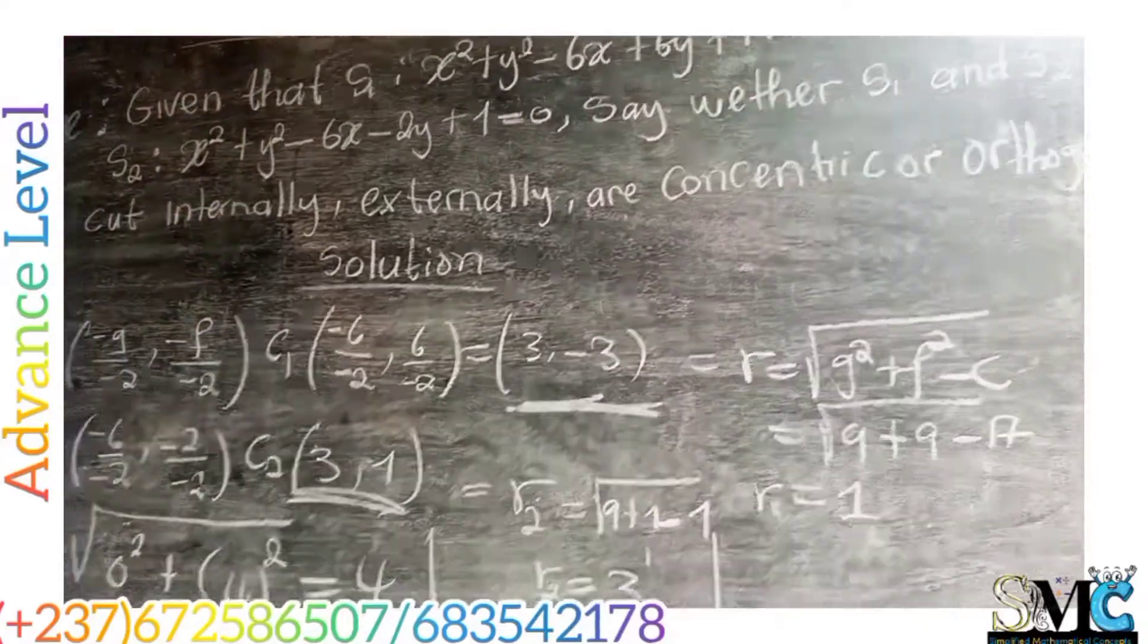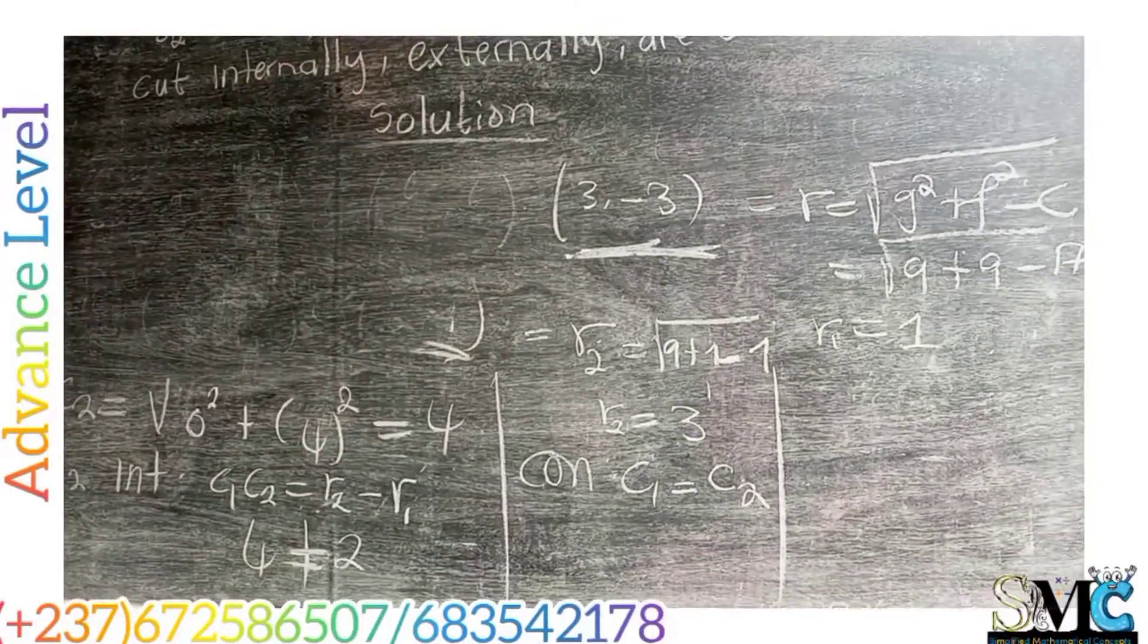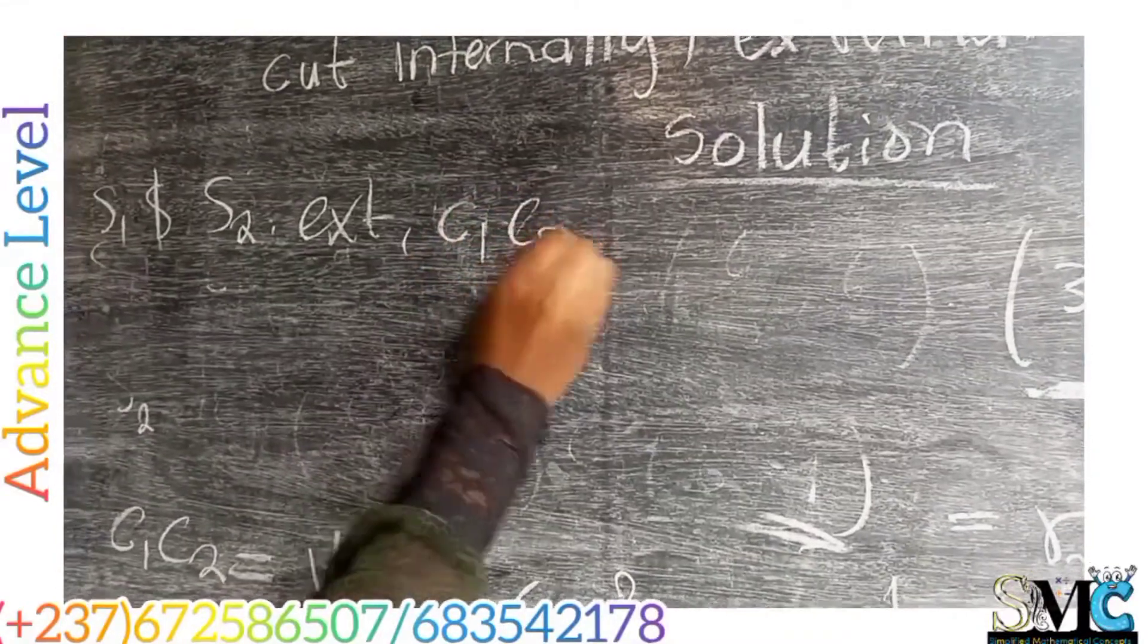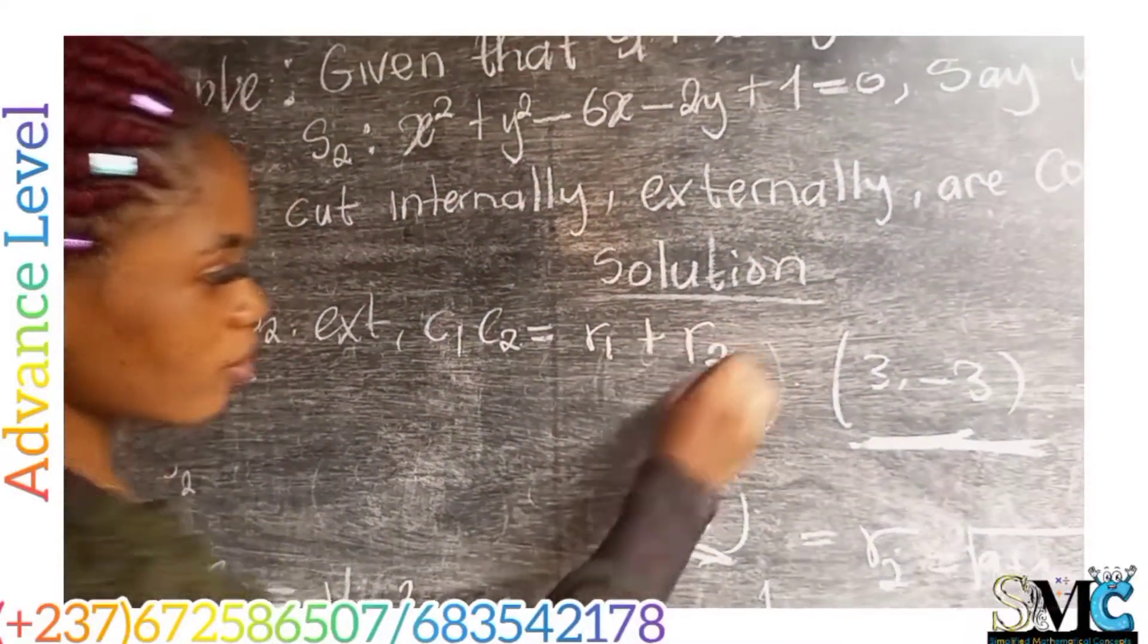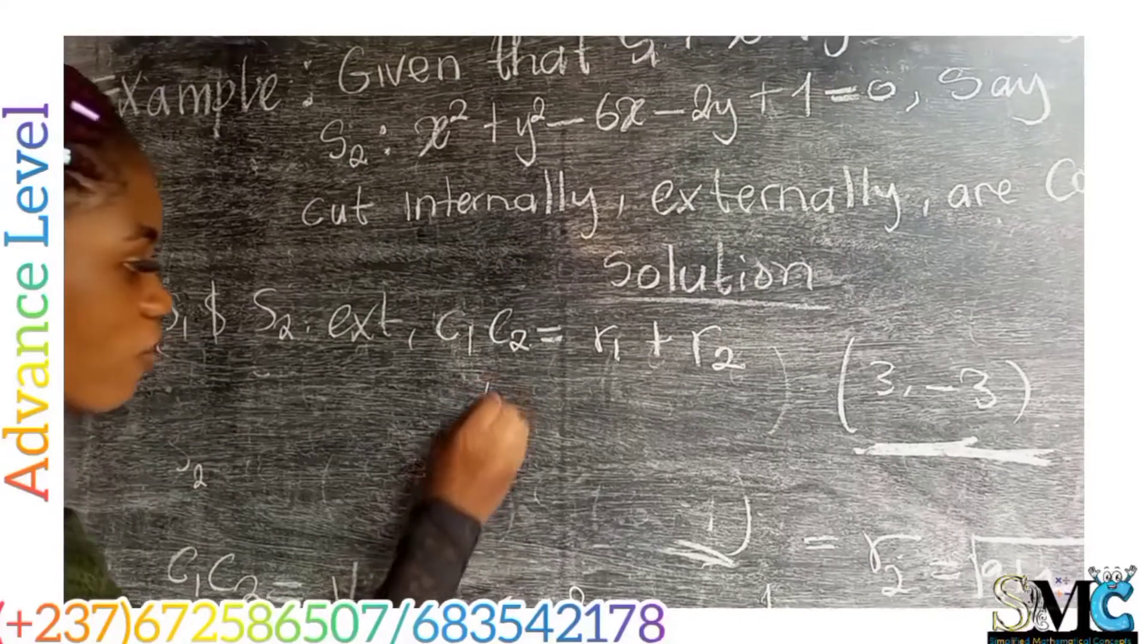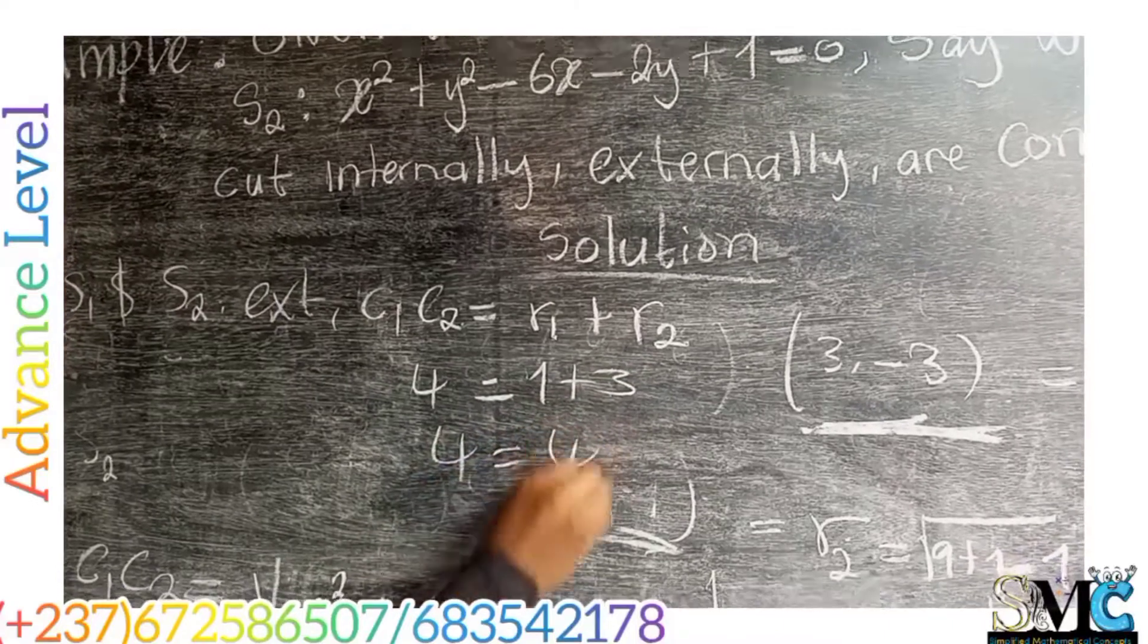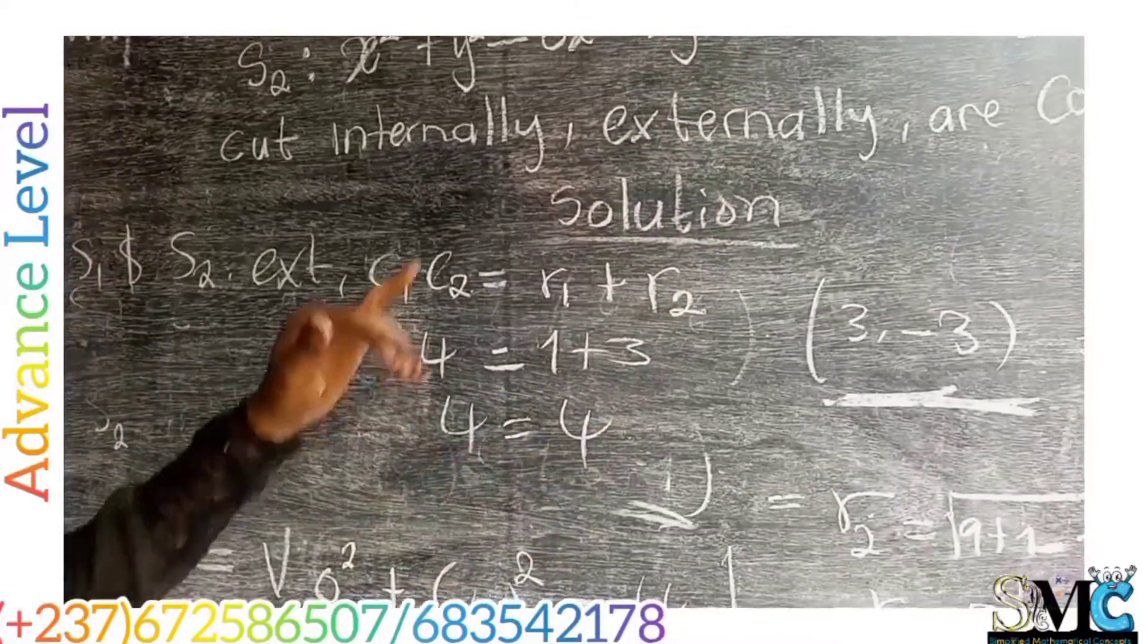In the third case, if the two circles touch externally, so if S1 and S2 touch externally, then the distance C1, C2 should be equal to R1 plus R2. Looking at that, our distance C1, C2 gave us 4. 4 should be equal to R1, which is 1 plus 3. So we see that 4 is equal to 4, implying that the two circles touch externally.